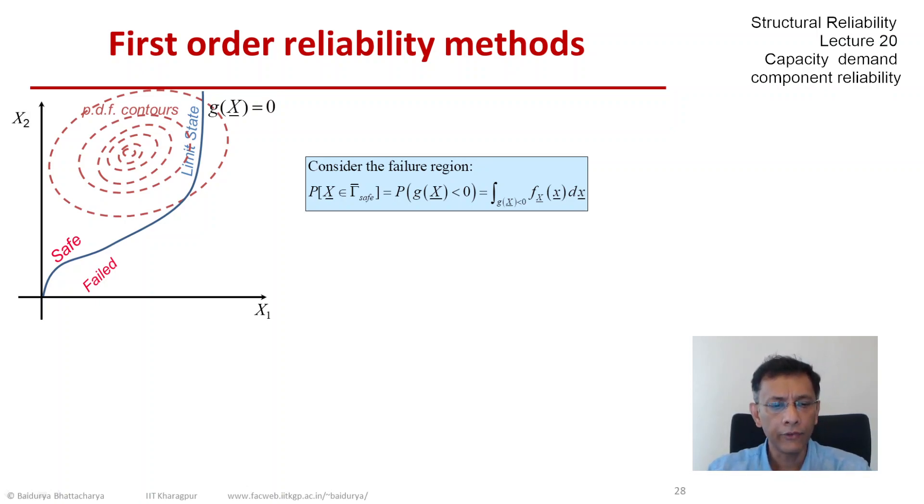In FORM, the idea is to map the basic variables into another space of variables Y. And let us say that there is a one-to-one correspondence between X and Y.